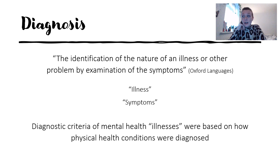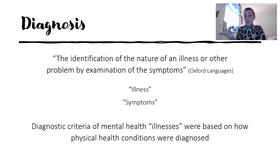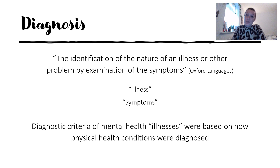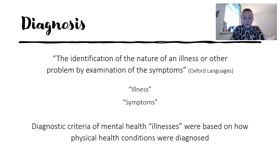In physical health, someone with cancer might have an observable lump that can be assessed by feeling it — that's a symptom. They can also describe observable things like weight loss. But mental health conditions aren't quite the same. What we know about social, psychological, and biological factors is that mental health conditions can affect people in different ways — someone who's gone through the same trauma as someone else might not be affected in the same way.